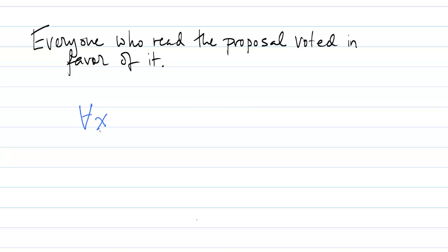The assertion being made about everyone in a certain group is that they voted in favor of the proposal. So somewhere we need to have the expression V(x) indicating that x voted in favor of the proposal.